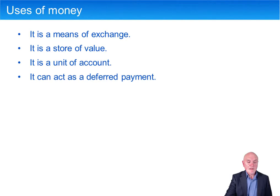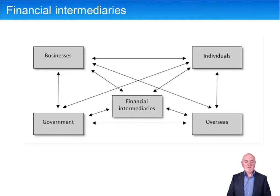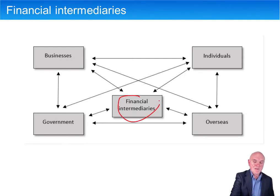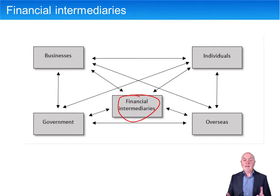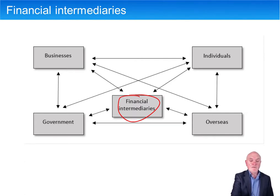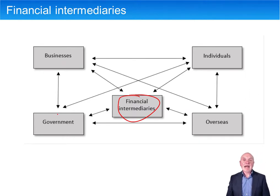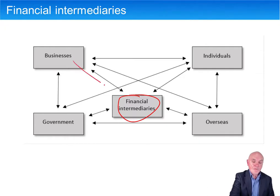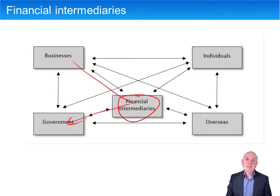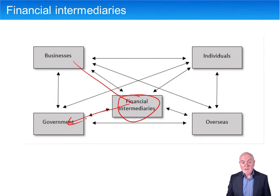What about financial intermediaries? Financial intermediaries — for example, banks — sit at the centre of economic flows. Businesses will receive money from individuals as they sell to them, and businesses can put that in the bank. The bank can then have it paid out to another business. Businesses also have exchanges with government — for example, paying tax — and the chances are this will go through the financial intermediary. Businesses pay money into a bank account and then later pay it out to the government as taxation.